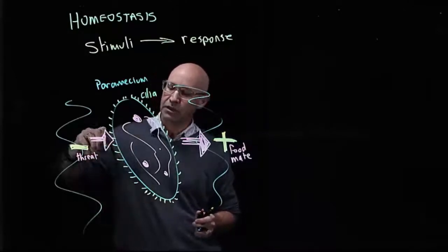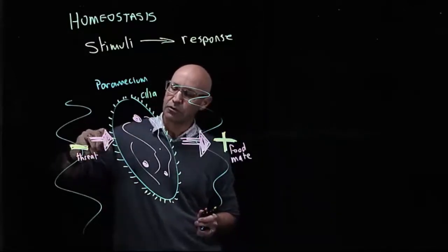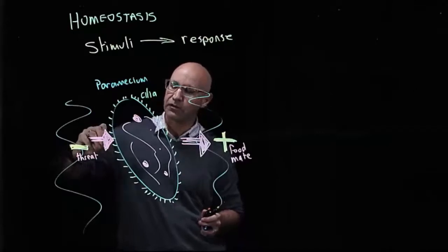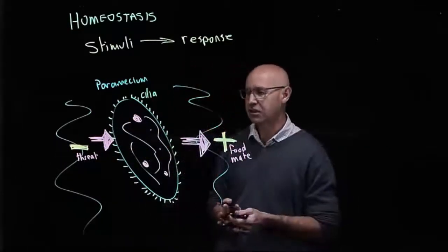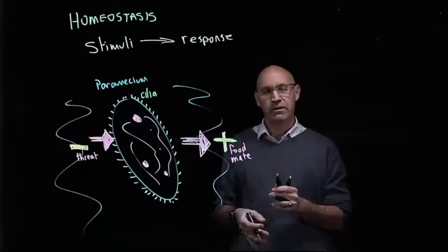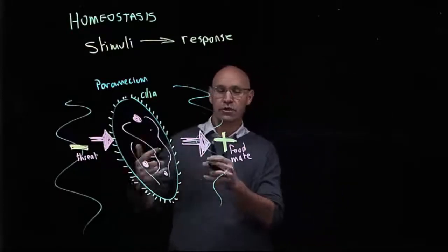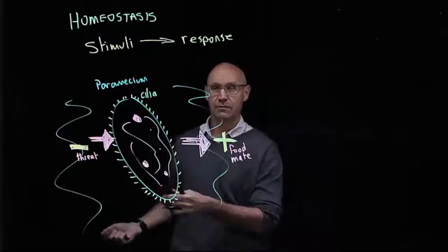So quite simply, the paramecium is a very simple organism. It's very simple because it's only a single cell, so there's no specialization. As such, the only way that it can respond to stimuli is by moving either towards or away from the stimuli.